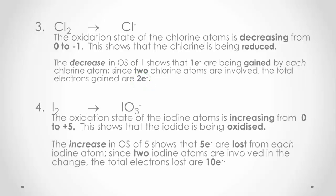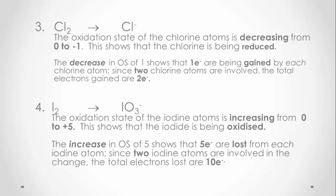When iodine molecules are reacted to form iodate ions, the oxidation state of the iodine increases from 0 to +5. This increase shows that the iodine has been oxidised, and the increase of 5 shows that 5 electrons have been lost from each iodine atom. Since there are 2 iodine atoms in an iodine molecule, the total electrons lost will be 10.